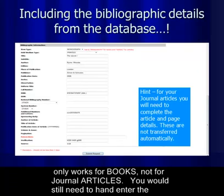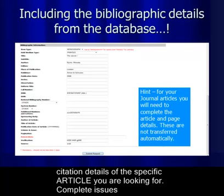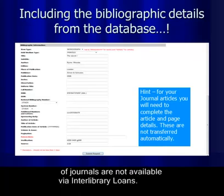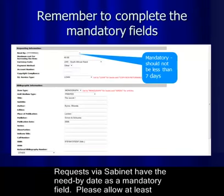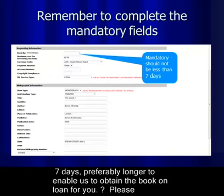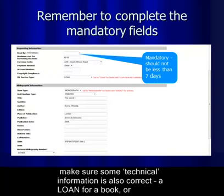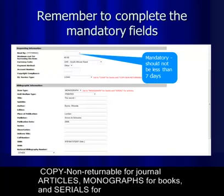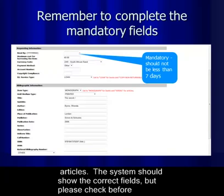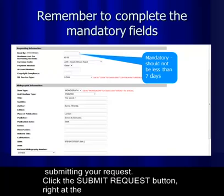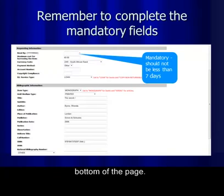Please note that this auto-fill only works for books, not for journal articles — you will still need to manually enter the details of the specific article you are looking for. Complete issues of journals are not available via interlibrary loans. Requests via SubNet have the need-by date as a mandatory field; please allow at least seven days, preferably longer. Also ensure the technical fields are correct: 'Loan' for books or 'Copy' (non-returnable) for journal articles; 'Monographics' for books and 'Serials' for articles. Check before clicking the Submit Request button at the bottom of the page.